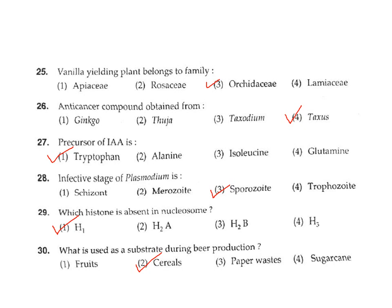Question 29: Which histone is absent in the nucleosome? In the nucleosome, H2A, H2B, H3, and H4 are present. H1 is not present inside the nucleosome — H1 is located outside the nucleosome. Correct answer Option 1.